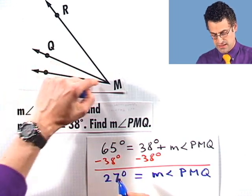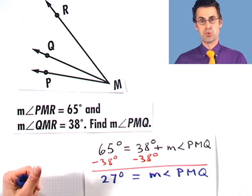And so that measure right there, that little teeny angle, turns out to be 27 degrees. Here we could see an example of the angle addition postulate working for us to resolve this fun little question.